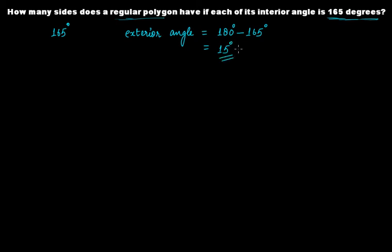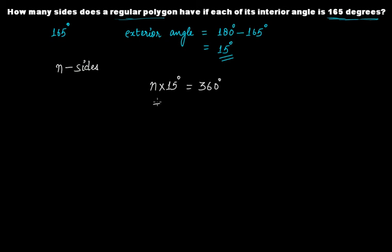Each exterior angle is 15 degrees. Assuming the polygon has n sides, it will also have n exterior angles. The sum of the exterior angles equals 360 degrees, so n × 15 = 360. Solving, n = 360 ÷ 15 = 24. Therefore, the polygon has 24 sides.